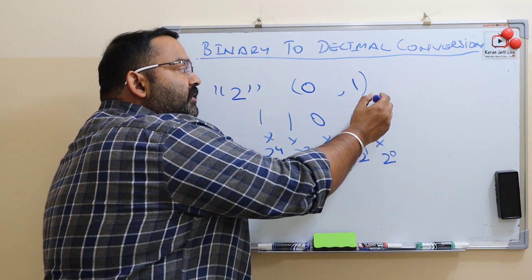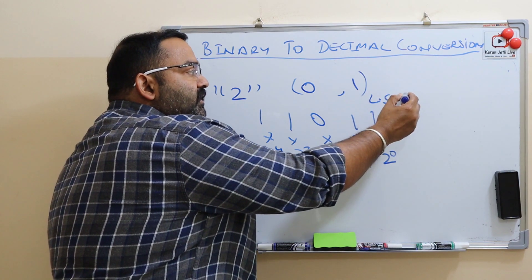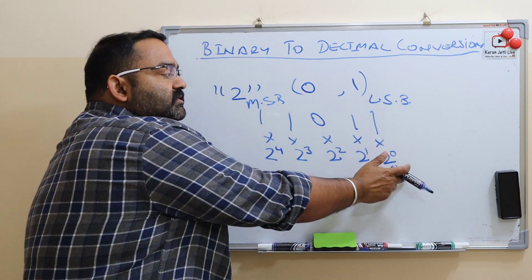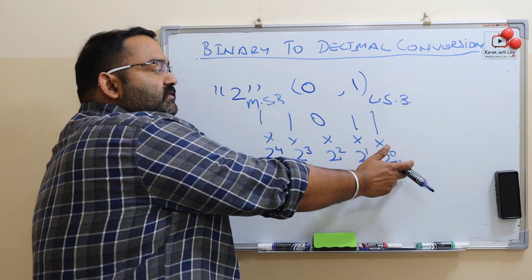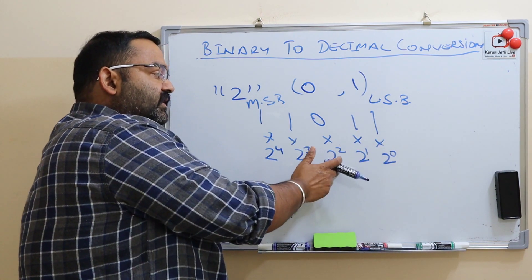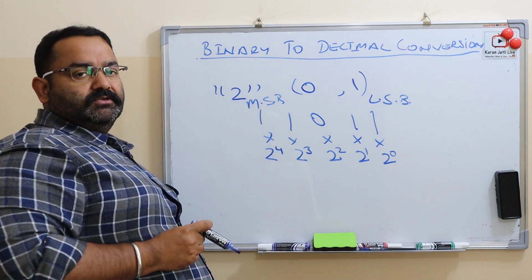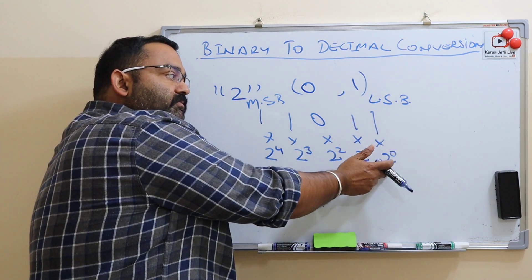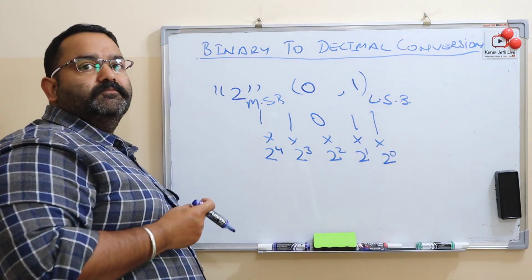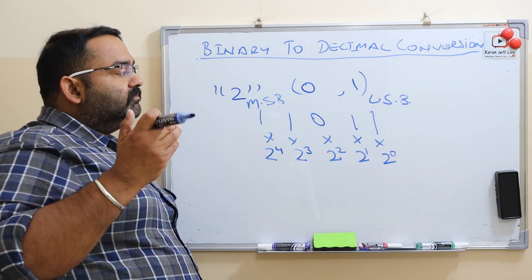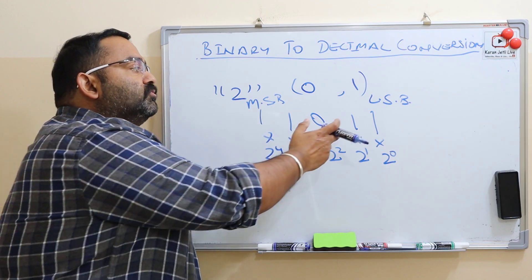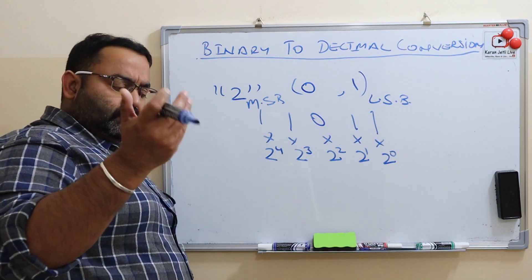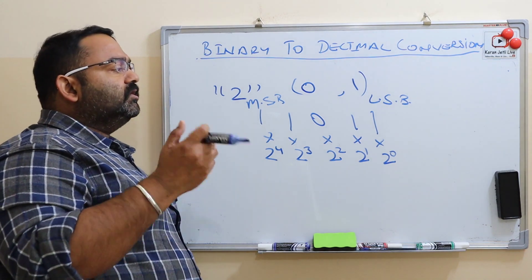So least significant bit — LSB — and most significant bit — MSB. The counting starts from zero. This is the 0th bit, first, second, third, fourth. So we have to multiply the number with the base to the power of this position. It depends upon the position of the number. We also call it positional notation.